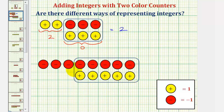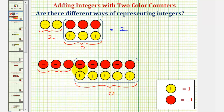Looking at the chips below, these five red counters and five yellow counters would result in zero, leaving us with three red counters, which represent negative three. We could use all of these counters to represent negative three.